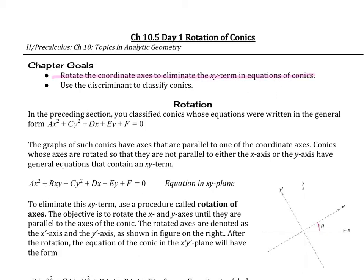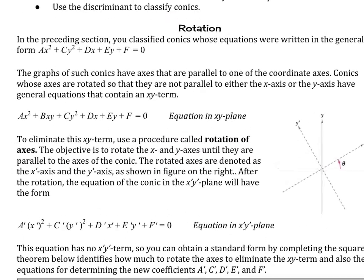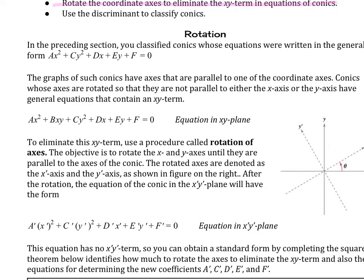In the preceding section, we classified conics whose equations were written in the general form ax² + cy² + dx + ey + f = 0. The graphs of such conics have axes that are parallel to one of the coordinate axes. Conics whose axes are rotated — so they are not parallel to either the x-axis or y-axis — have general equations that contain an xy term. In order to eliminate this xy term, we're going to use a procedure called rotation of the axes. The objective is to rotate the x and y axes until they are parallel to the axes of the conic.